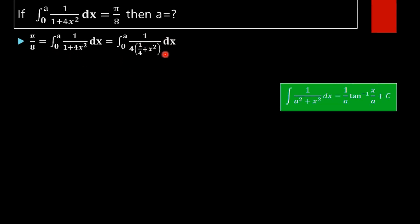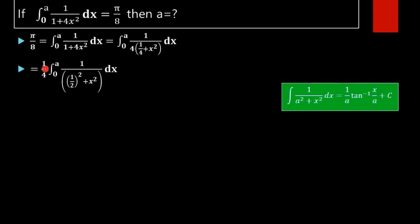If we take 4 outside, x² remains. In the numerator there is no 4, since 4/4 = 1. On taking 1/4 outside, we get a 1/4 here. Since 1/4 is a constant, we can take it outside and rewrite the integral from 0 to a of 1/((1/2)² + x²) dx.